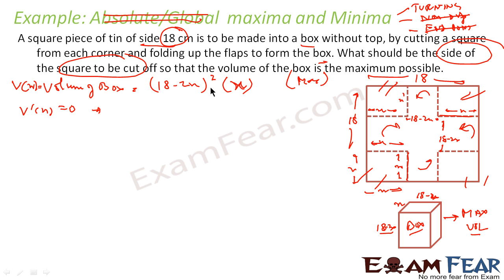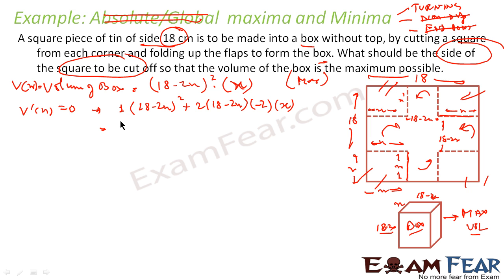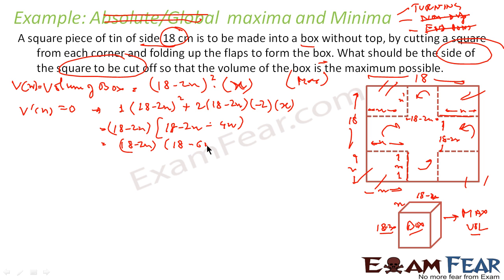Taking the chain rule, we differentiate: first differentiate x and keep (18 minus 2x)² constant, then differentiate (18 minus 2x)² giving 2(18 minus 2x)(minus 2) and keep x constant. This gives V'(x). Solving, taking (18 minus 2x) as common, we get (18 minus 2x)(18 minus 6x) equals 0. So x comes out to be 9 (from 18/2) and x equals 3 (from 18/6). There are two possible values of x for which this function has maxima or minima.